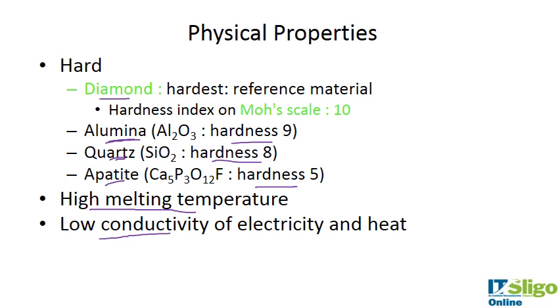Ceramics have very high melting temperatures and can withstand chemical attack. They also have very low conductivity of both electricity and heat, which makes them very useful for insulating — for pacemaker leads, for example.